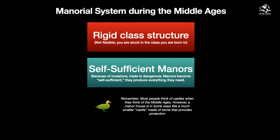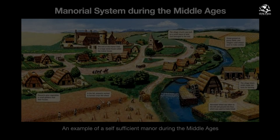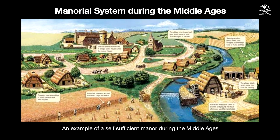Most people think of castles when they think of the Middle Ages, but a manor house is in some ways like a castle on a smaller scale. It's made of stone, so if Vikings, Magyars, Angles, or Saxons invade, the manor house provides better protection for the serfs, lords, and knights if needed. This image depicts the manorial system during the Middle Ages - an example of a self-sufficient manor, with a stone manor house in the background providing protection.